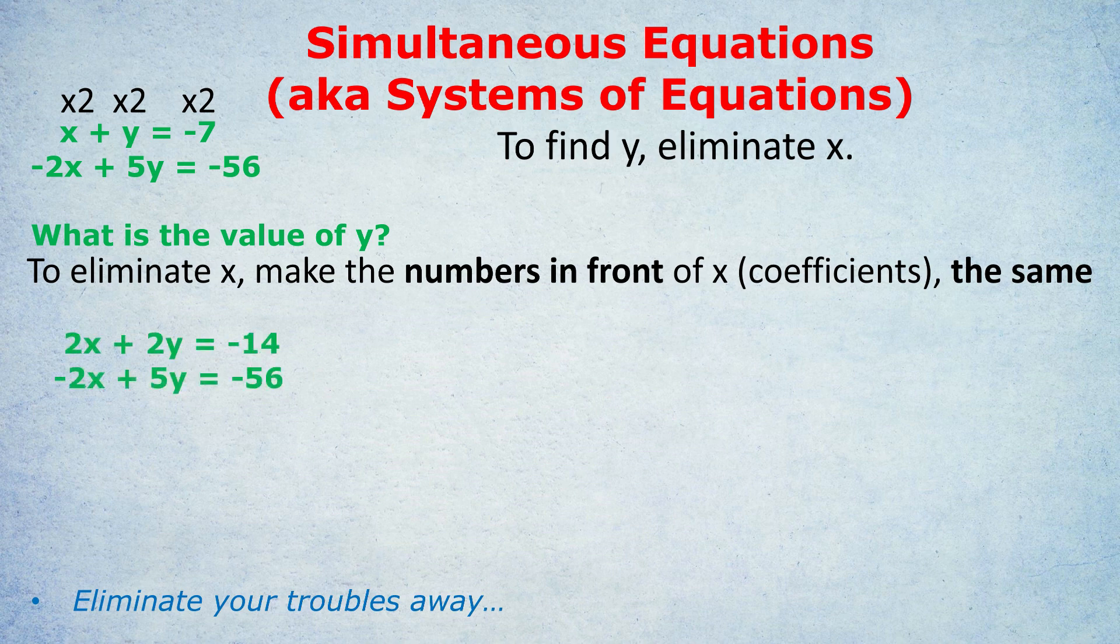We now have these two equations, 2x plus 2y equals minus 14. And the second equation is the same as it started off. What have we achieved by doing that? We've made the numbers in front of x the same. For the first equation, it says 2x. For the second equation, it's minus 2x. Don't worry about the signs, plus and minus, just focus on the number. We've made it the same. At this point, you're probably really curious, why are we putting all this effort into making the number the same of the variable we're going to eliminate?